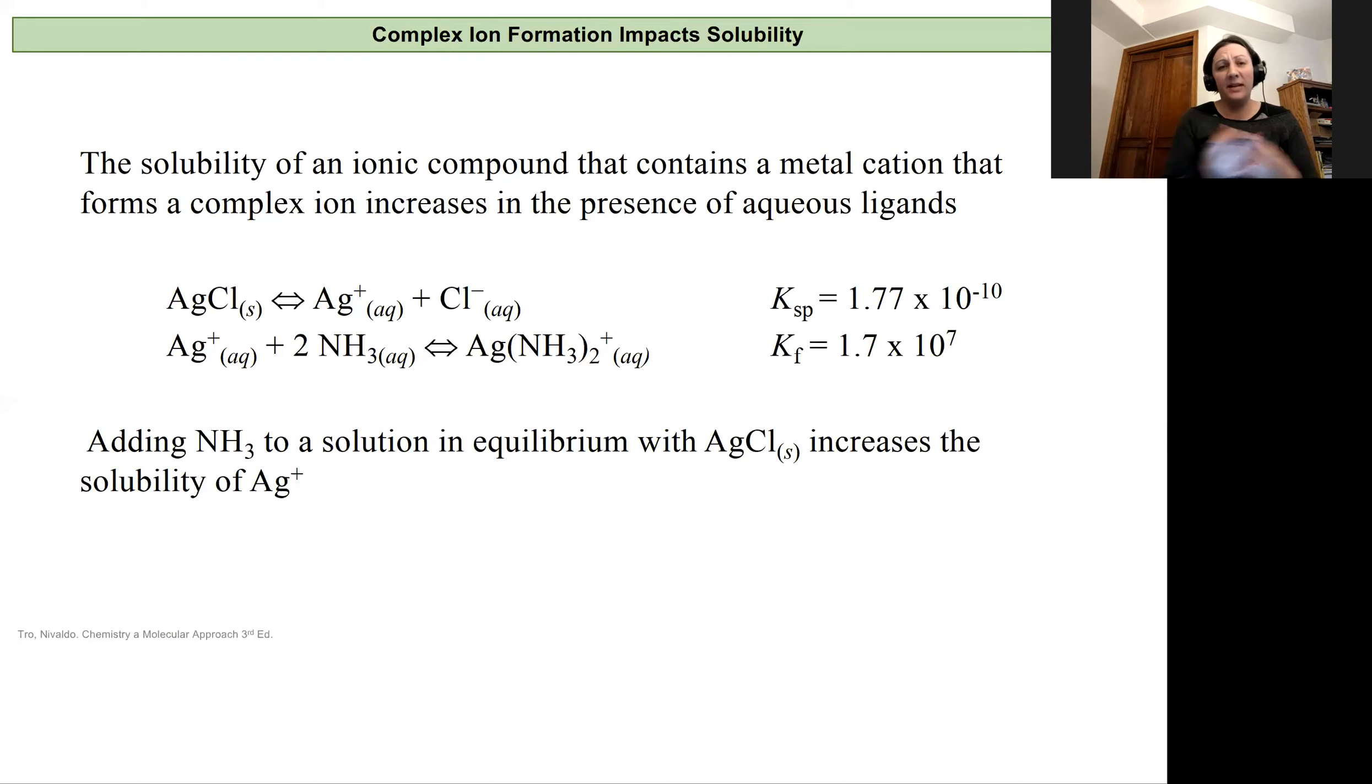Let's say we have a beaker that's full of silver chloride and we have a little bit of these ions in solution. If we pour in some ammonium, we know that our silver is actually going to react with the ammonium and form a complex ion, the silver ammonium compound. That has a formation constant that's larger than one, so any silver ions in solution are going to form that complex ion.